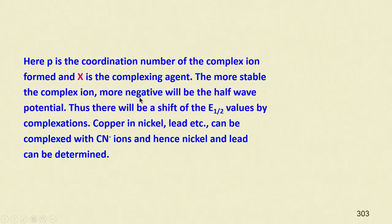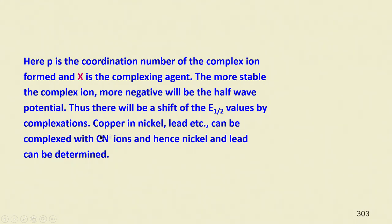The more stable the complex ion, the more negative will be the half-wave potential, meaning it is more difficult to decompose. There will be a shift of E_half values by complexation. Copper, nickel, lead, etc. can be complexed with cyanide ions, and nickel, lead, etc. can also be determined in this way.